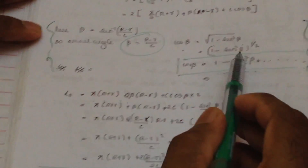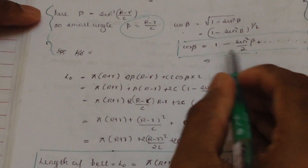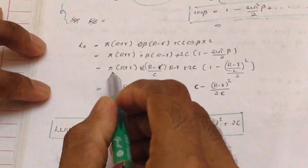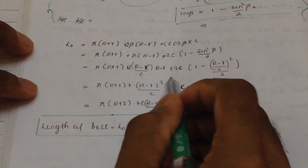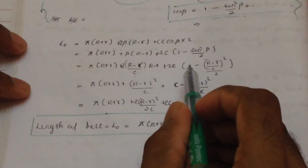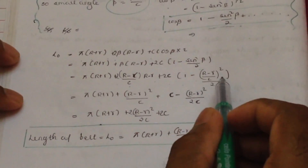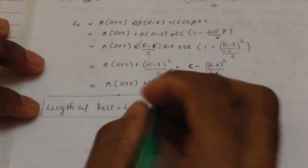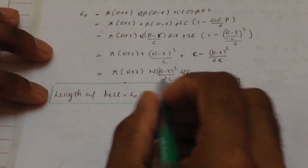Now, cos β = √(1 − sin²β), and using the approximation cos β ≈ 1 − sin²β / 2, and substituting sin β = (R − r)/C, we get cos β ≈ 1 − (R − r)²/(2C²). So the total length of belt becomes L₀ = π(R + r) + 2·(R − r)/C·(R − r) + 2C·[1 − (R − r)²/(2C²)].